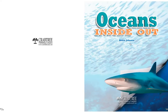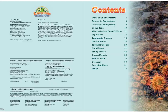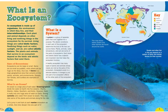'Oceans Inside Out' by Robin Johnson. Part 1: What is an ecosystem? An ecosystem is made up of organisms, or living things, the environment in which they live, and their interrelationships — their relationships between one another. Each plant and animal depends on other living and non-living things in the ecosystem for its survival. Living things are called biotic factors; non-living things such as water, sunlight, and air are called abiotic factors.